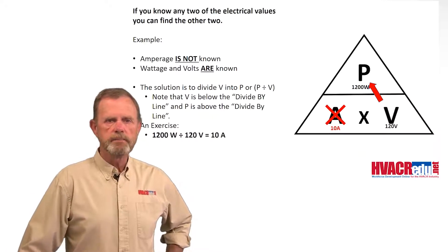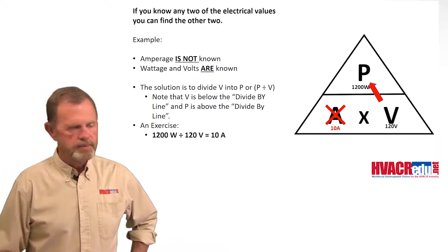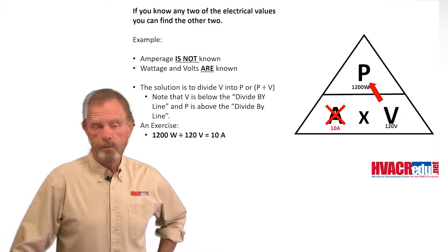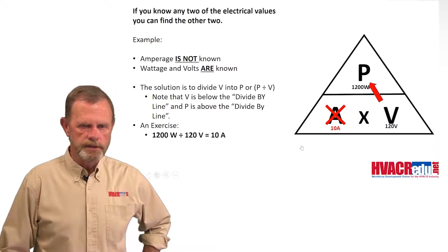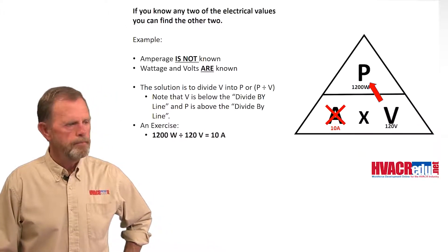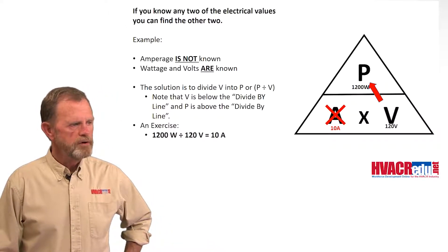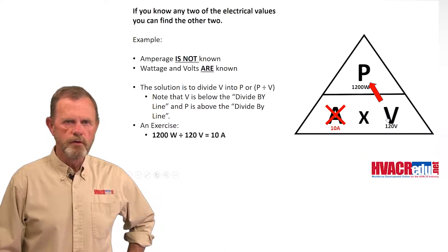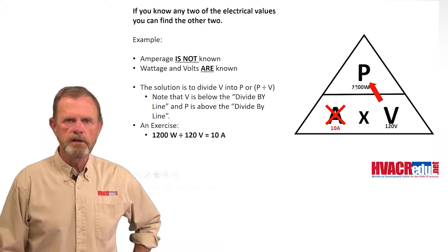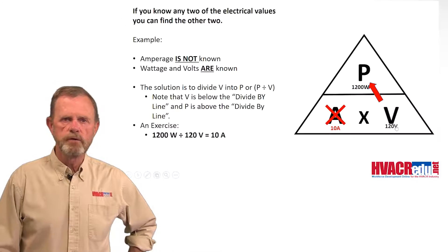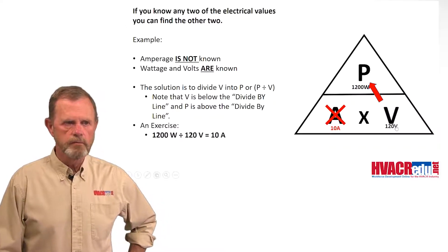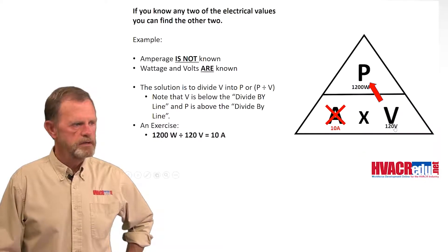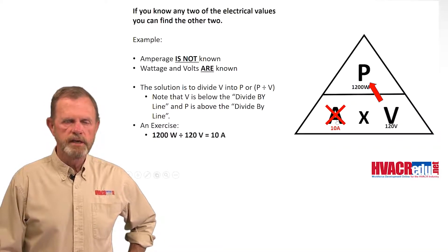Now we're changing up to find wattage or power — P for power, which is wattage in electricity. We know it's a 1200 watt load on a 120 volt circuit, but we don't know the amperage. Maybe this is a 1200 watt electric heater. To find out how many amps it draws, we divide 120 volts into 1200 watts and we get 10 amps.